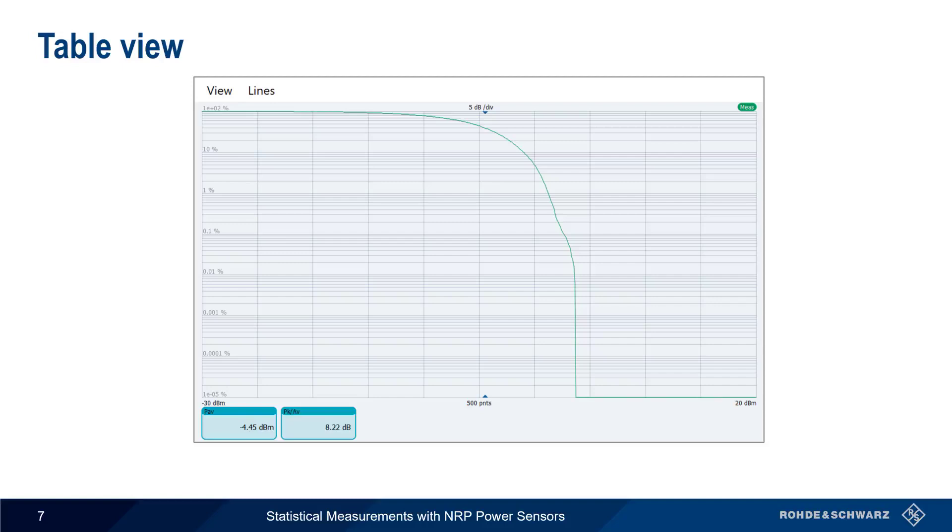In statistics mode, some values, such as average power and peak-to-average ratio, are displayed by default in the bottom left corner of the PowerViewer GUI.